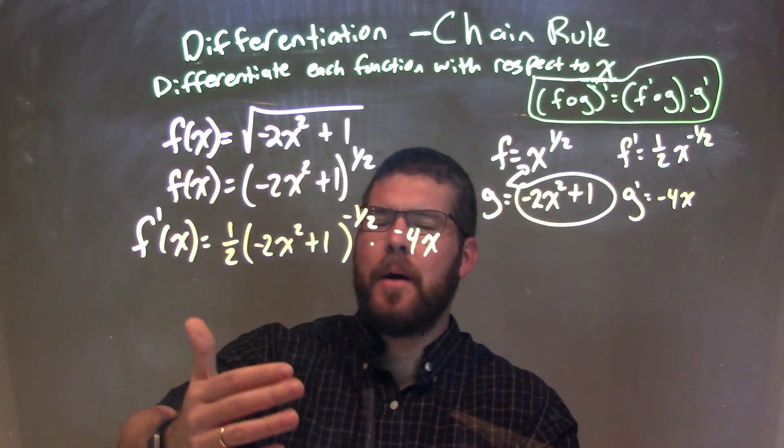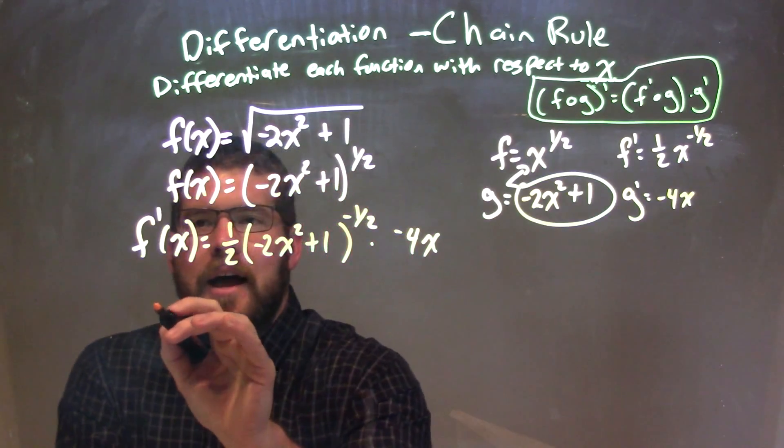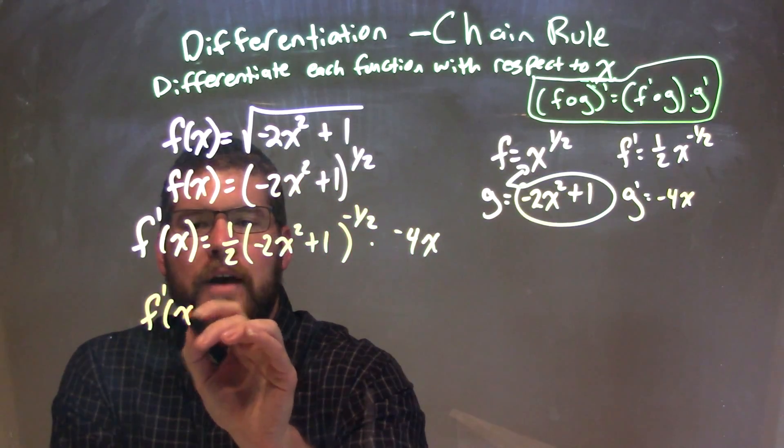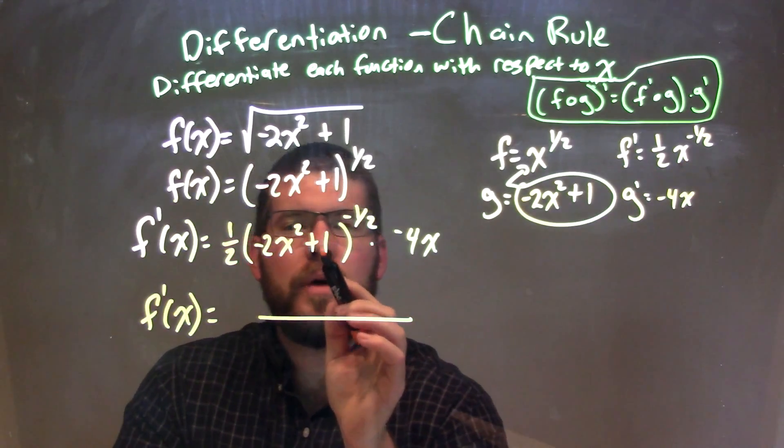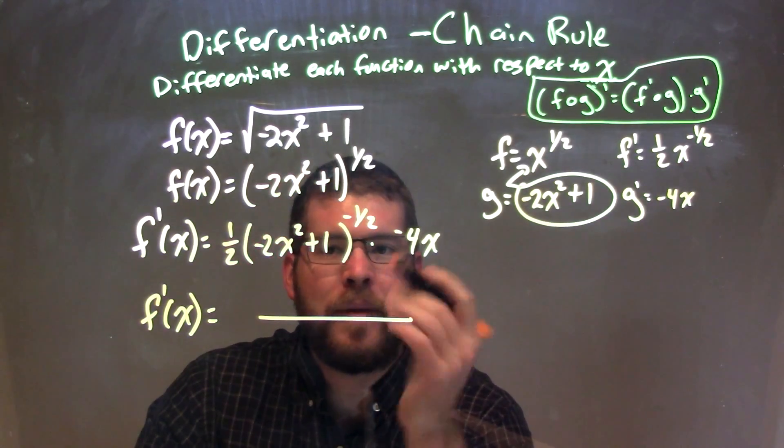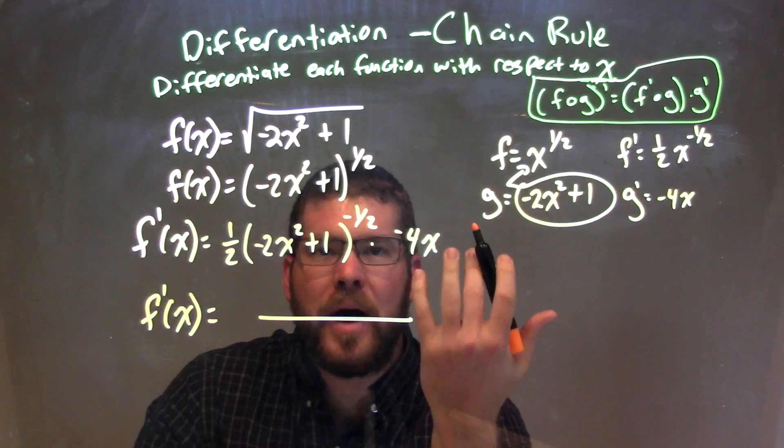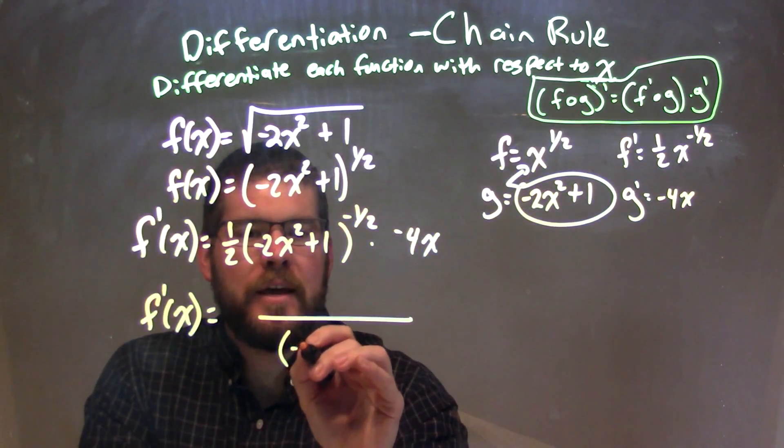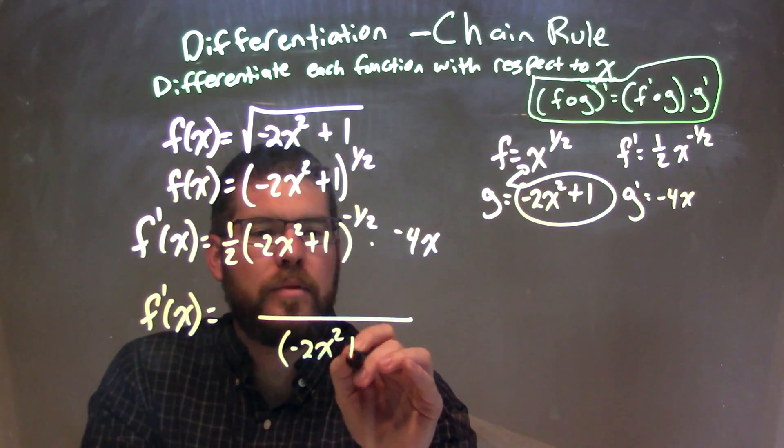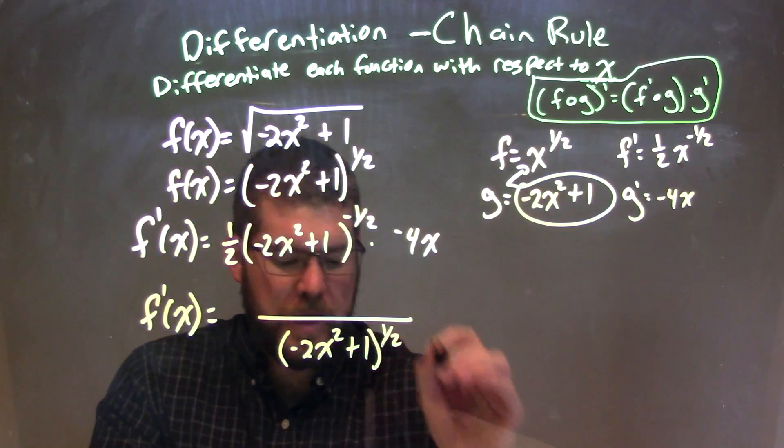So my next step, I'm going to write my final answer here. I have f prime of x. And I see that I have this parentheses, negative 2x squared plus 1, all to the negative 1 half power. I want to make that to the positive 1 half power. So I'm going to put that in the denominator. So we have negative 2x squared plus 1 to the positive 1 half power.